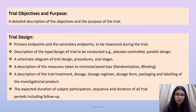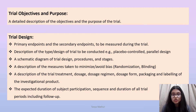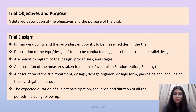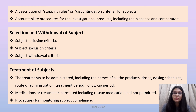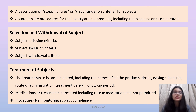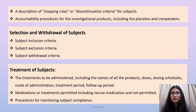A description of the measures taken to minimize or avoid bias, such as randomization or blinding techniques, is included. Also covered is a description of the trial treatment — dosage, dosage regimen, dosage form, packaging and labeling of the investigational product, the expected duration of participation, and the sequence and duration of all trial periods including follow-up. Additionally, a description of stopping rules or discontinuation criteria for subjects is required, as there may be instances where a subject is unwilling to undergo the trial. Accountability procedures for investigational products including placebos and comparators are also included.